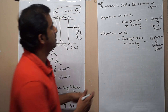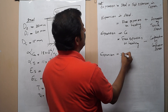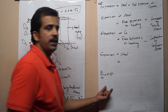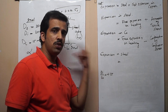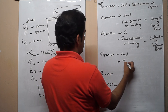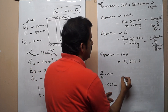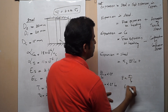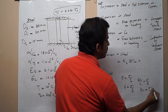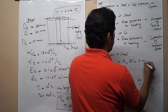Expansion in steel equals: free expansion on heating, where δL = α × ΔT × L₀. So we write α_steel × ΔT × L₀ plus expansion by tensile stress. Using E = stress/strain, strain = σ/E, and δL = σ × L₀ / E. Therefore, expansion by tensile stress in steel is σ_steel × L₀ / E_steel.